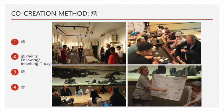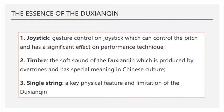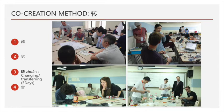The immersion stage helped us to identify the essence of the Du Chen Qing, which was, in order of priority: firstly, the joystick gesture control, which can control the pitch; secondly, the timbre, which is a very soft sound produced by harmonics; and thirdly, the single string, the key physical feature and limitation of the Du Chen Qing. Next, we moved into a three-day co-creation stage to reimagine the Du Chen Qing together.